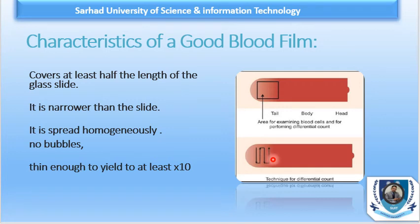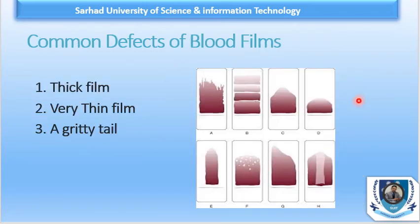Similarly, the film should terminate into a smooth, straight, or slightly curved end. It should be thin enough to yield at least 10 low-power fields where RBCs do not overlap. Whenever we are seeing overlapping, it means we are not focusing on the best area for slide morphology.